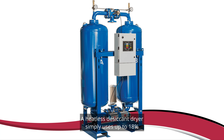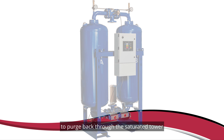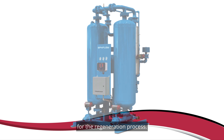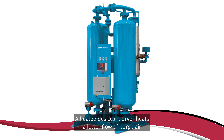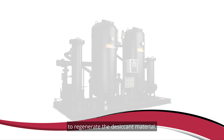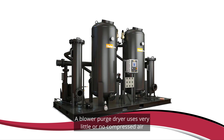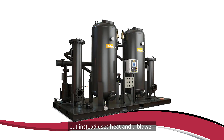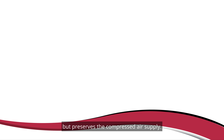A heatless desiccant dryer simply uses up to 18 percent of the rated capacity of the dryer to purge back through the saturated tower for the regeneration process. A heated desiccant dryer heats a lower flow of purge air to regenerate the desiccant material. A blower purge dryer uses very little or no compressed air in the regeneration process, but instead uses heat and a blower. It takes more energy to operate, but preserves the compressed air supply.